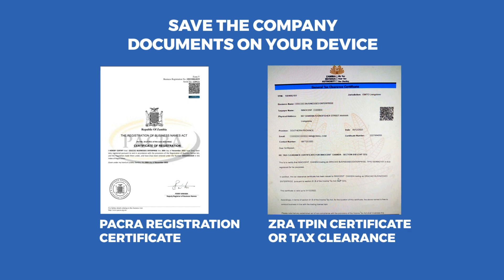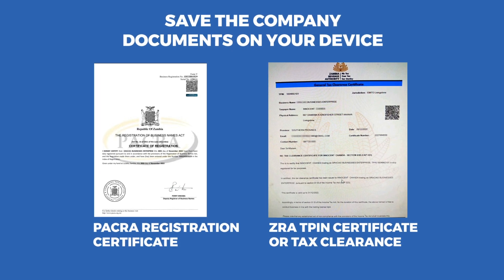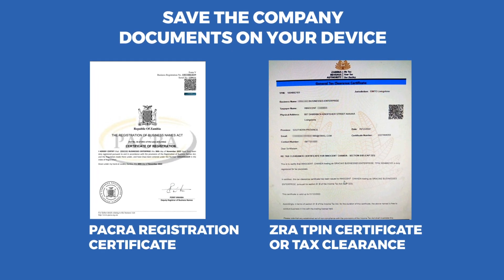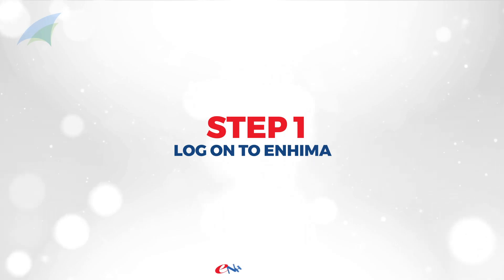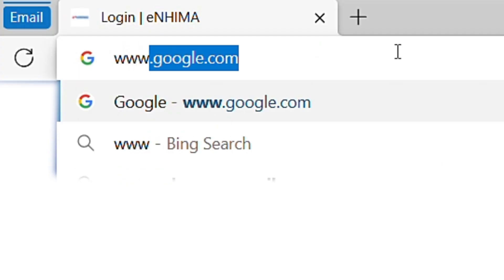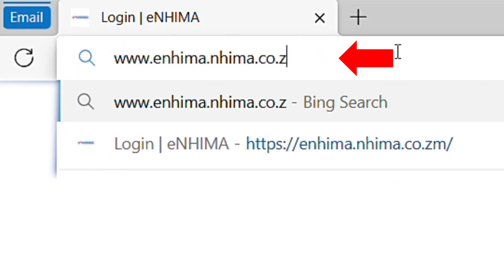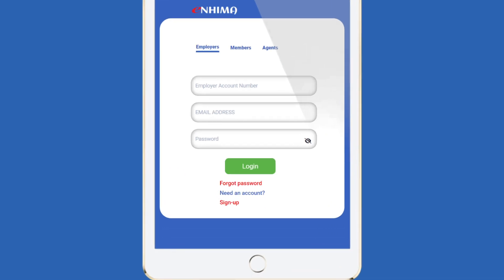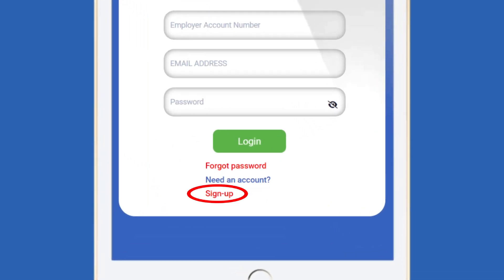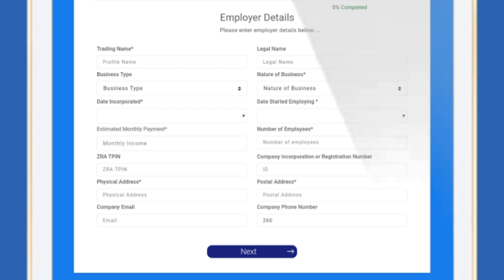Before commencing registration on the NEMA online platform, ensure to save your PACRO registration certificate and ZRA T-PIN or tax clearance certificate on the computer or device you intend to use.